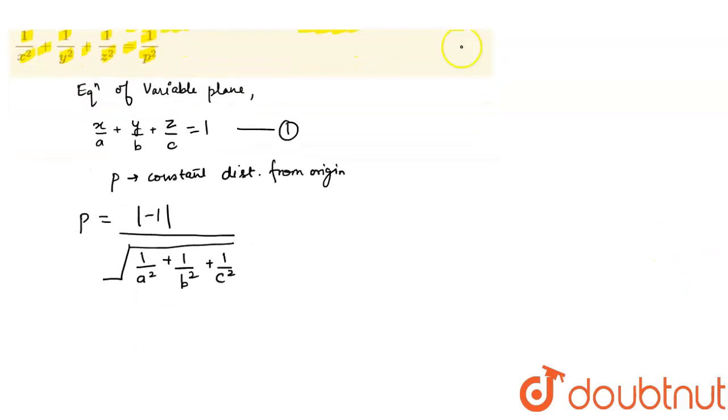By solving it further, what do I get? I get this implies 1 upon a square plus 1 upon b square plus 1 upon c square is equal to 1 upon p square after simplifying it.